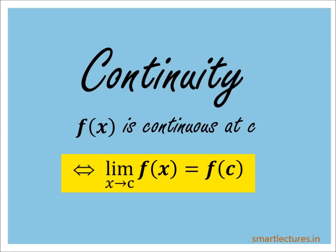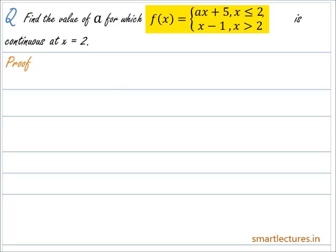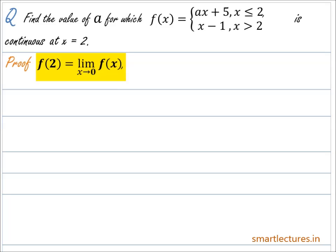A function is continuous at a point if and only if the value of the function at that point is equal to the limit of the function at that point. In other words, the given function will be continuous at x = 2 if and only if f(2) is equal to the limit of f(x) as x approaches 2.